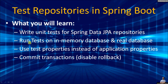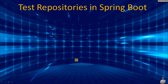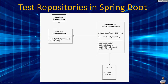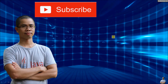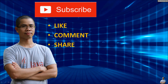In summary, you have learned how to write unit tests for Spring Data JPA repositories in a Spring Boot project, how to run tests with in-memory H2 database and a real MySQL database, how to use separate test properties instead of application.properties, how to commit transactions using @Rollback(false), and the key principle of using TestEntityManager for related entities. I hope you find this video helpful. Please subscribe, like, comment, and share. Thank you for watching.